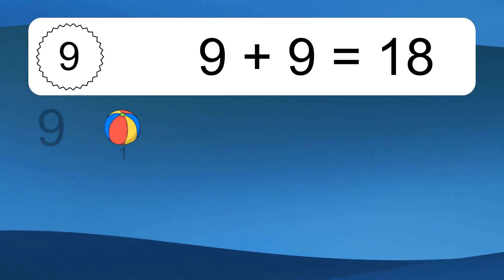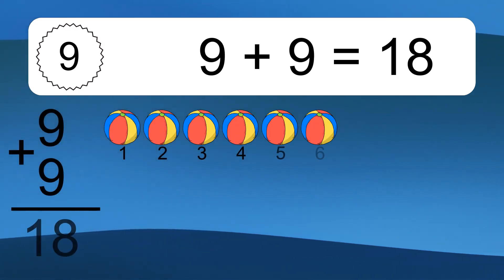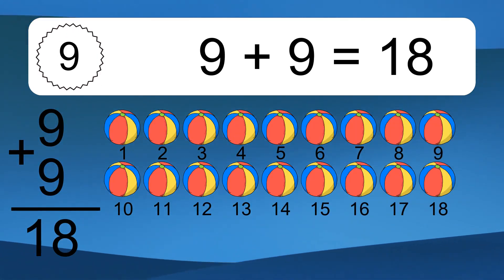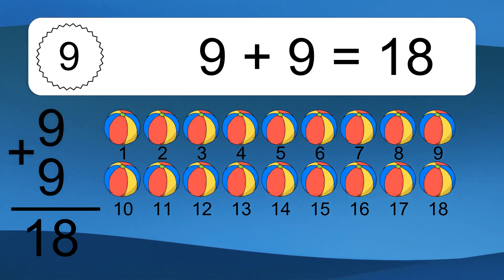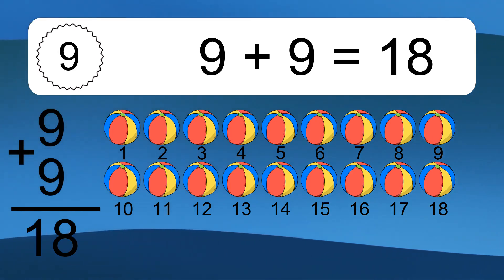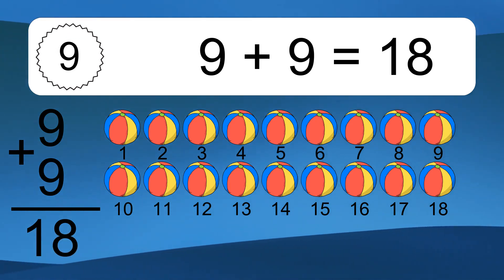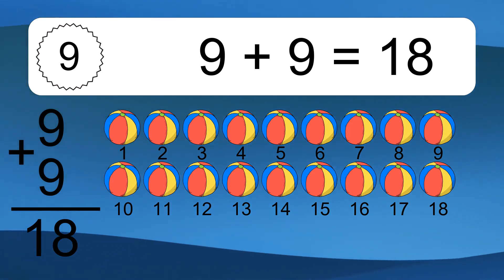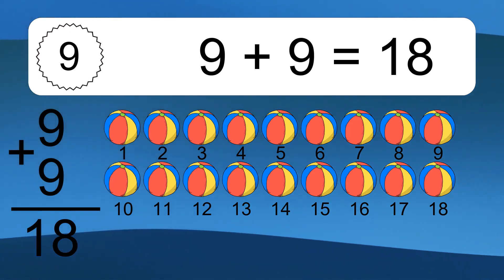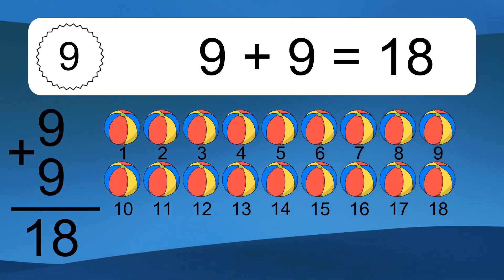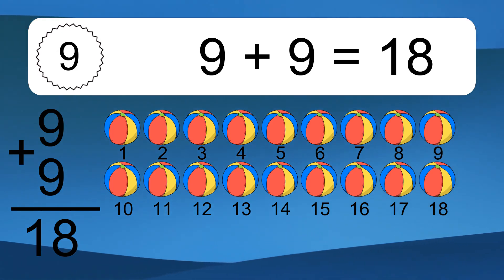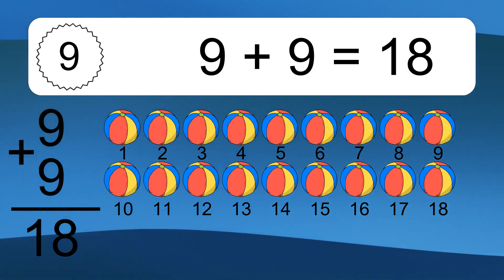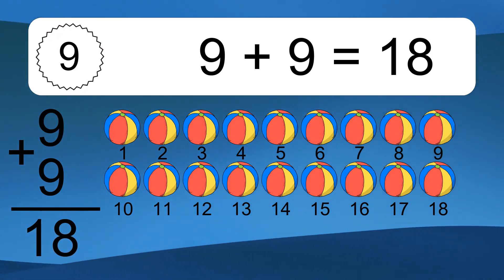9 plus 9 equals what? 9 plus 9 equals 18. Let's count it. 1, 2, 3, 4, 5, 6, 7, 8, 9, 10, 11, 12, 13, 14, 15, 16, 17, 18.